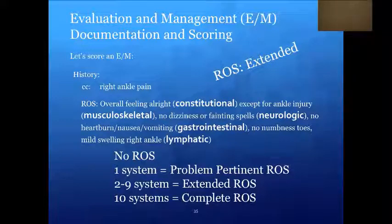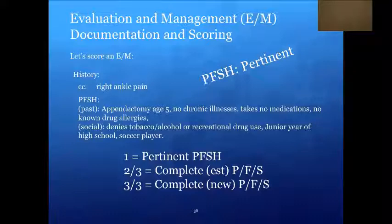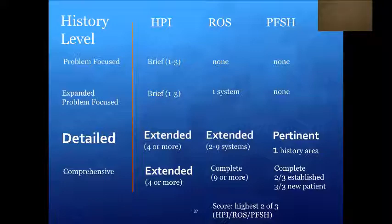For the review of systems, we have constitutional, musculoskeletal, neurologic, gastrointestinal, and lymphatic — placing us in an extended review of systems. For past family social history, we have past — appendectomy as a child, no chronic illnesses, takes no meds, no known drug allergies — and social — denies tobacco, alcohol, recreational drug use; junior in high school and a soccer player. There is no family history documented, so we only have two of three, making this pertinent past family social history. Combined with the extended HPI and extended ROS, this results in a detailed history.